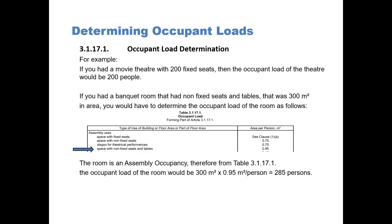Let's look at an example. If you had a movie theater with 200 fixed seats, then obviously the occupant load of the theater would be 200 people, as noted in the article.